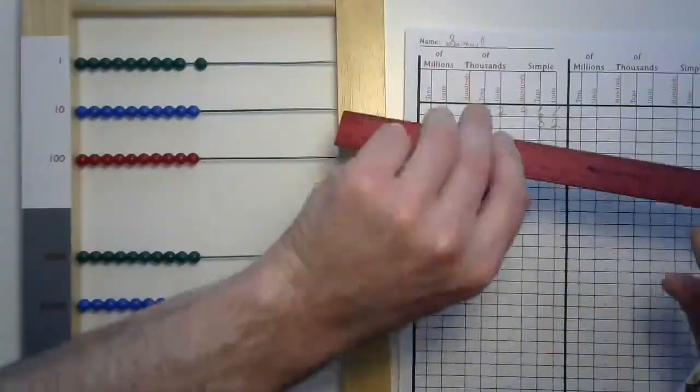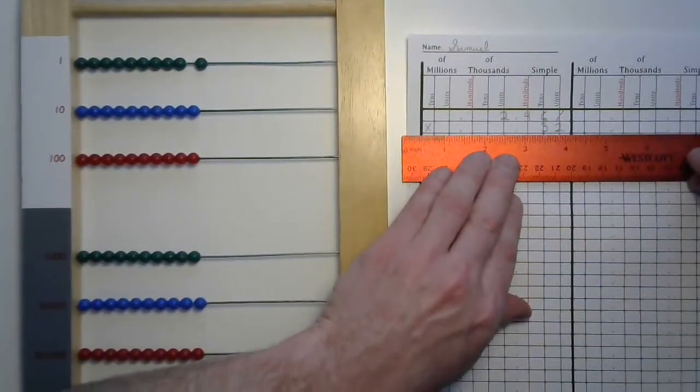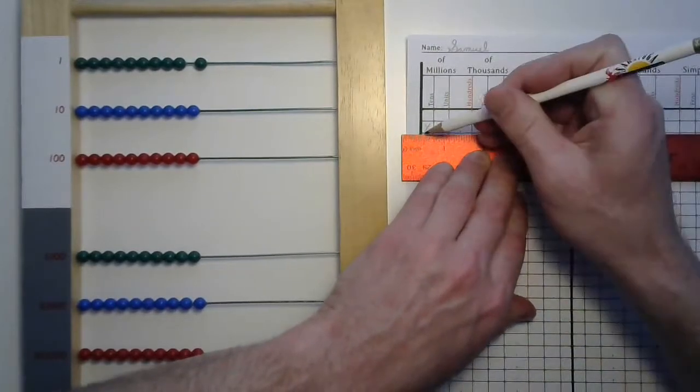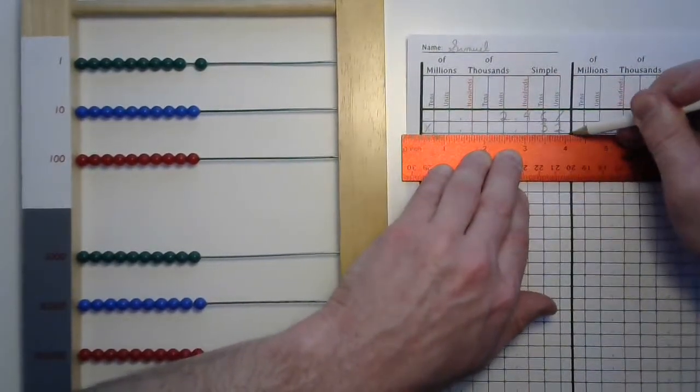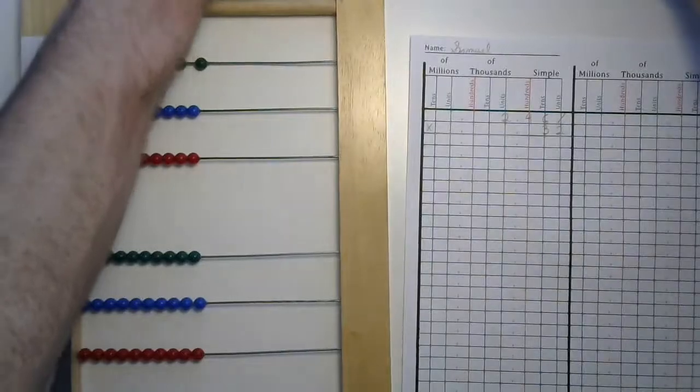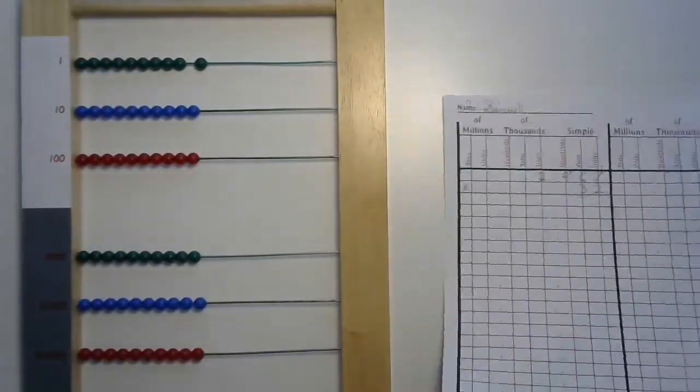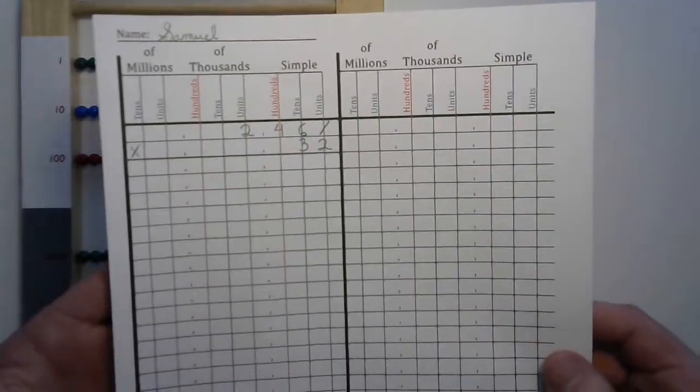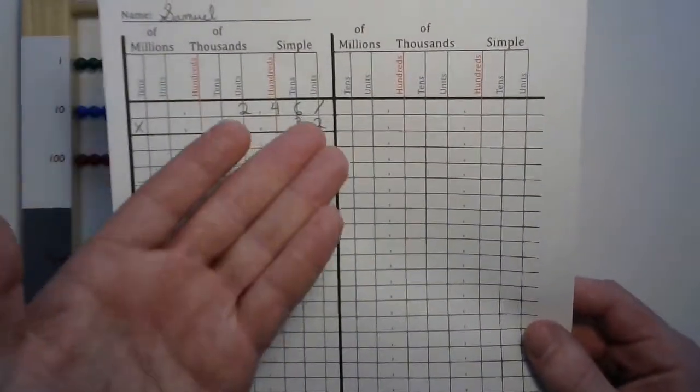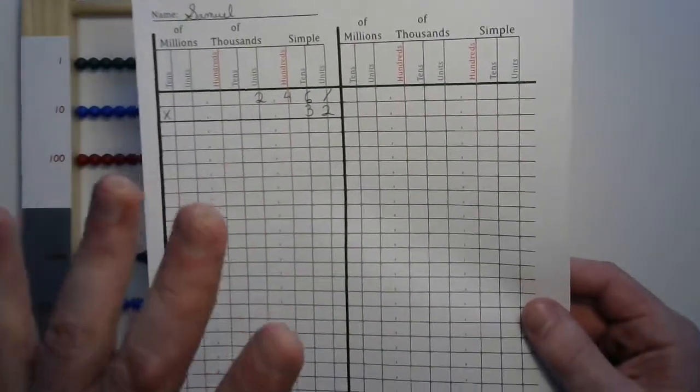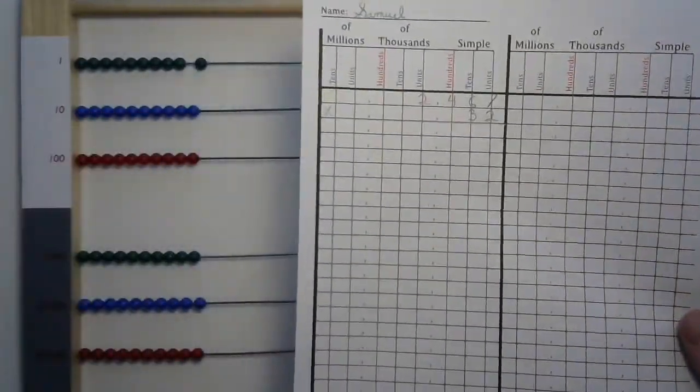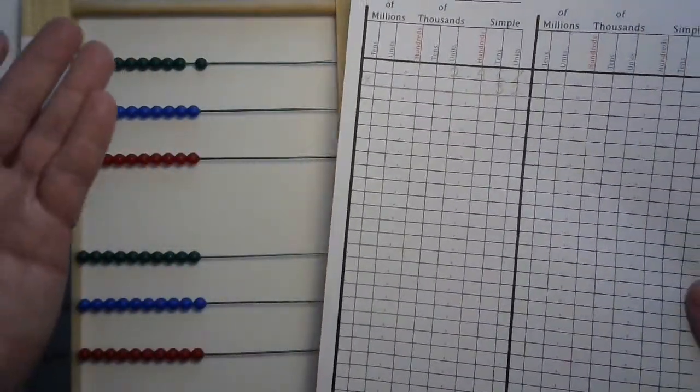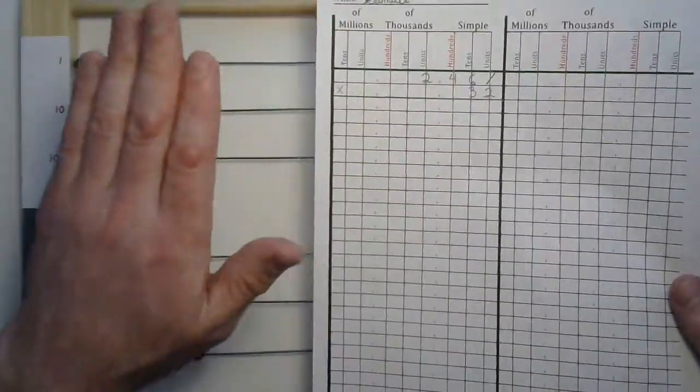And an added touch could be to take a straight edge or a ruler right underneath those two numbers and reinforcing that separation between where we will be putting our product. Except we might look at something a little bit different about products today. We're using two digits in our multiplier, we're going to end up with two partial products, parts of our final answer.